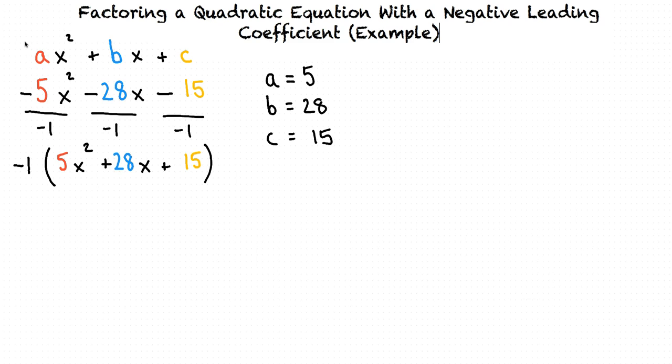According to the a-c factoring method, we need to figure out which factors multiply to equal a times c and add to equal b. In our problem, we can see that a times c equals 75. Now we need to figure out which two factors of 75 also add to 28.